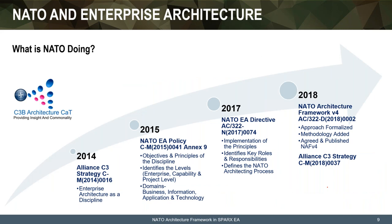NATO itself has been doing architecture for a long time. The most recent major document was the NATO Architecture Framework Version 4, plus a new Alliance C3 Strategy which contains strategic concerns about architecting. Going back on that timeline, we come to the publication of the NATO Architecture Framework Version 3 in 2007 — which tells us that NATO and NATO nations have been doing architecting for several years.